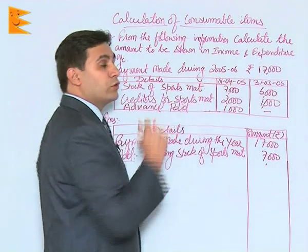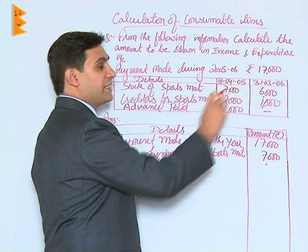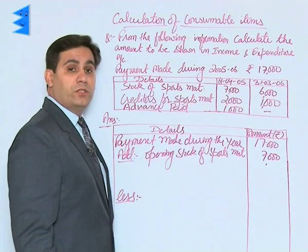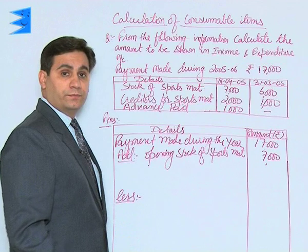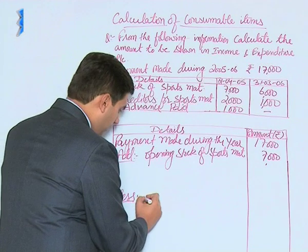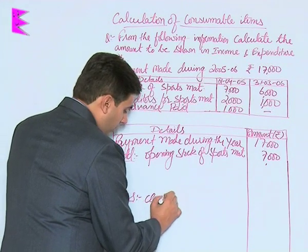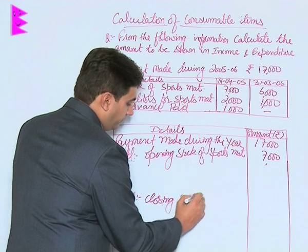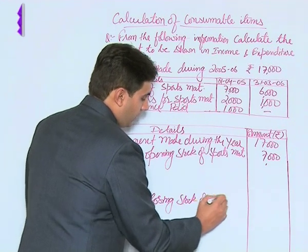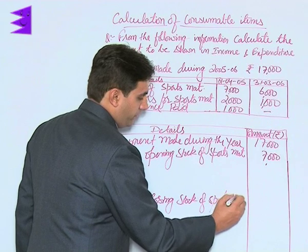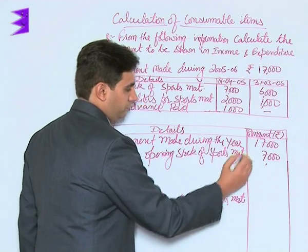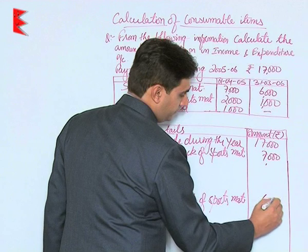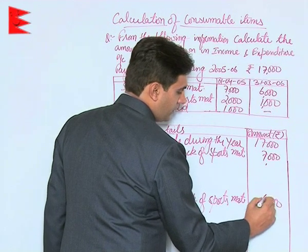Vice versa for closing stock — closing stock is given to be 6,000. This amount would not be used during the current year; hence it should be taken as a deduction. Closing stock of sports material: 6,000.